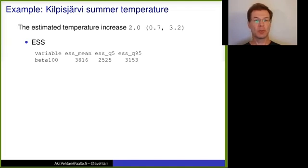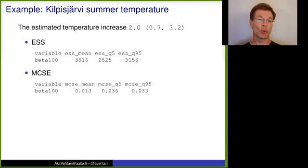I've used here our package posterior to compute this value, these effective sample sizes for mean and 5 and 95 percent quantiles. You can see that the values differ, but all are relatively high, about 2,000. So maybe they are enough.